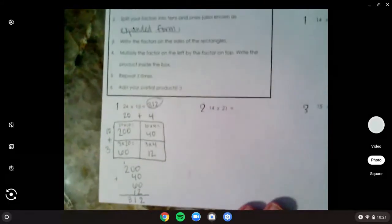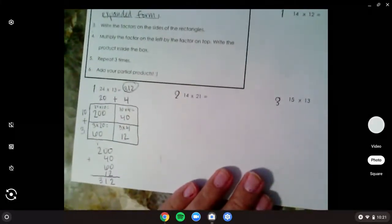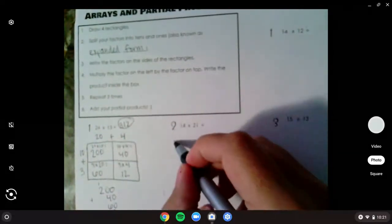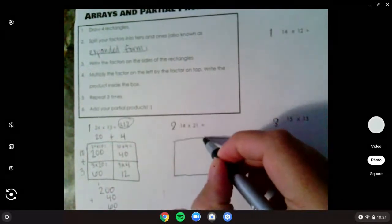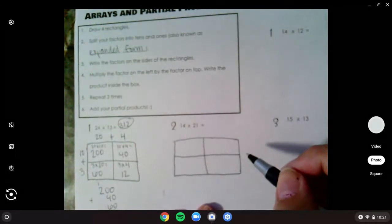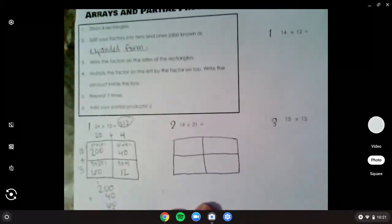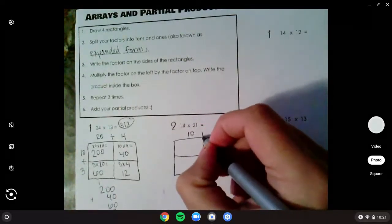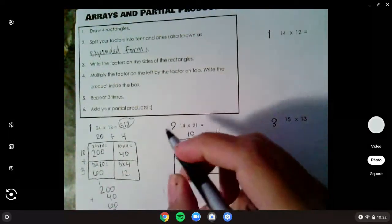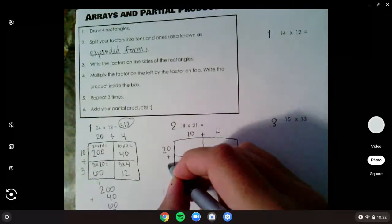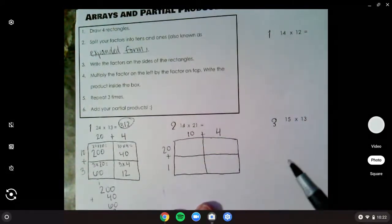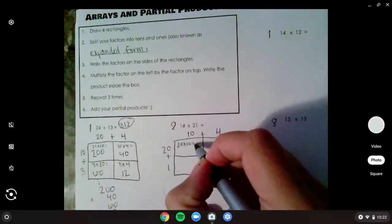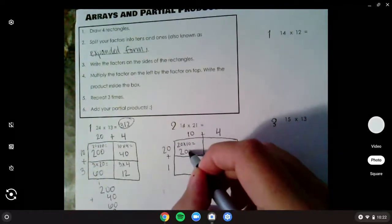Let's try one more together. Now if I forget the steps, I can always look back up here. So the first thing it tells me to do is draw four rectangles. So I'm going to draw a big rectangle and split it into four parts. Next, I need to split my factor into tens and ones. So 14 I know is 10 plus 4. And 21 is 20 plus 1. Now I multiply the left times the top. So 20 times 10 equals 2 times 1 is 2. And add two zeros, that's 200.